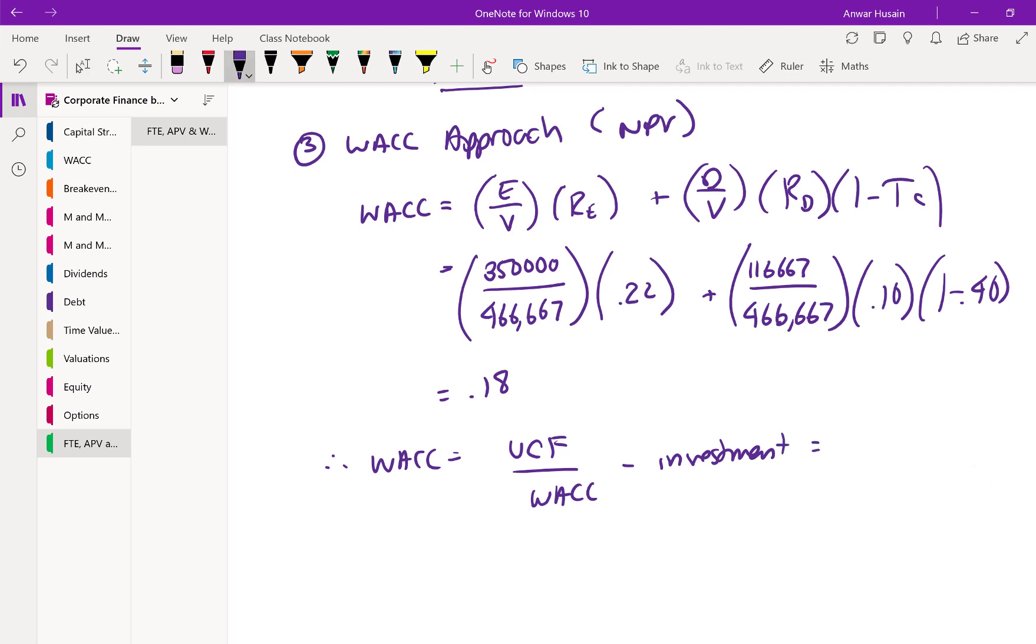Okay, so the unlevered cash flow was 84,000, which was the 140 after tax. We just calculated the WACC as 18. And 440 was the investment that was given. So we work out as expected to 26,667.